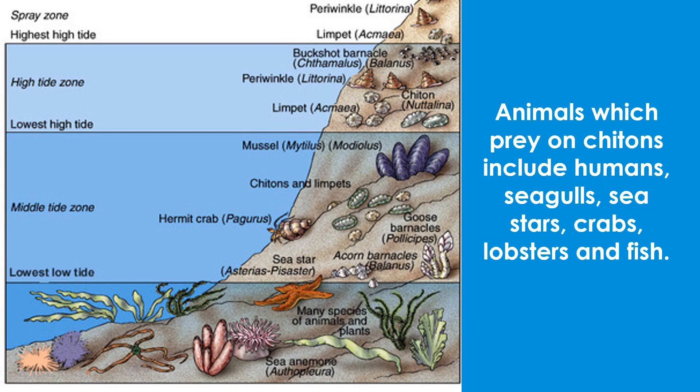Animals which prey on chitons include humans, seagulls, sea stars, crabs, lobsters, and fish.